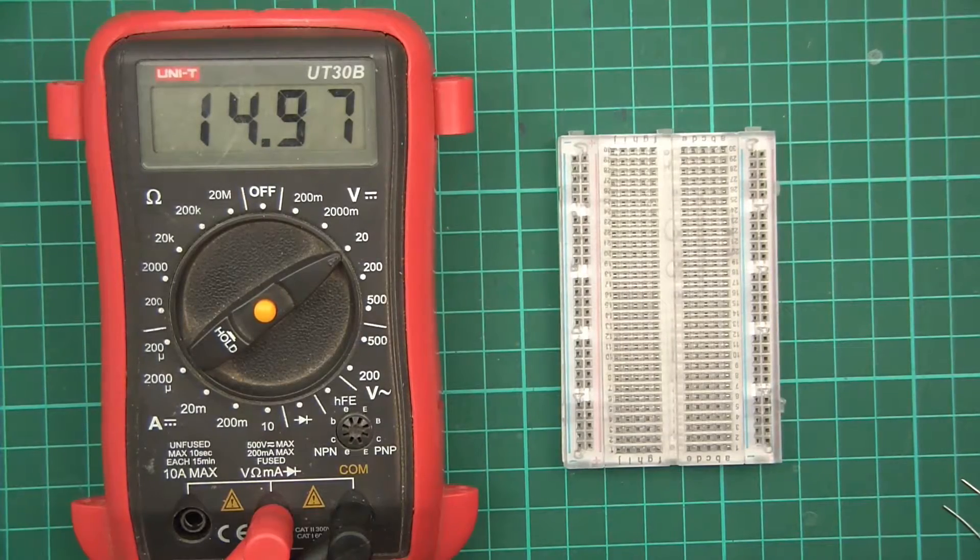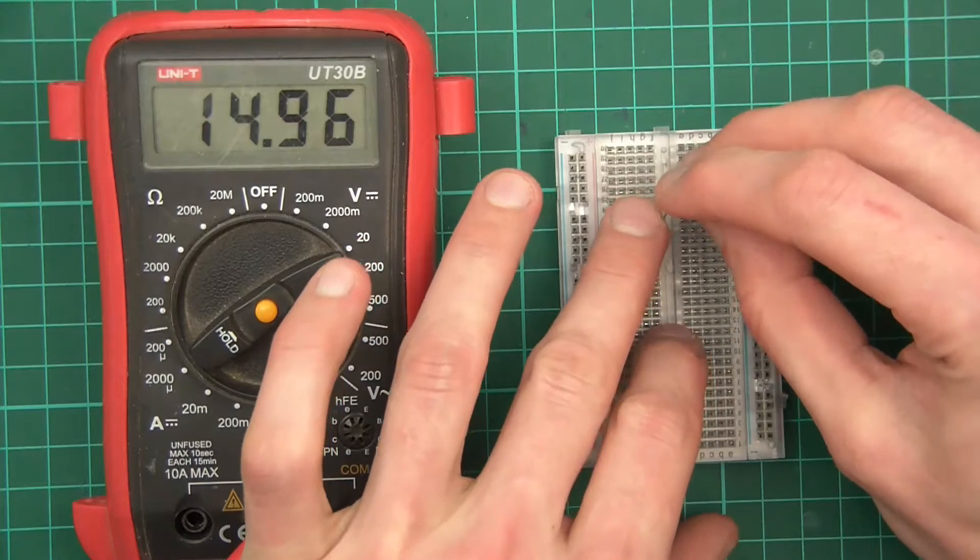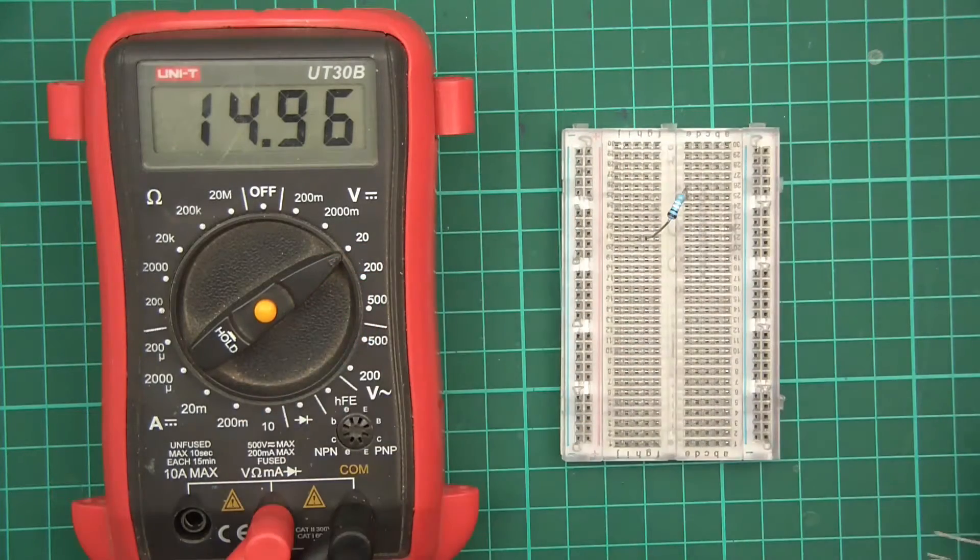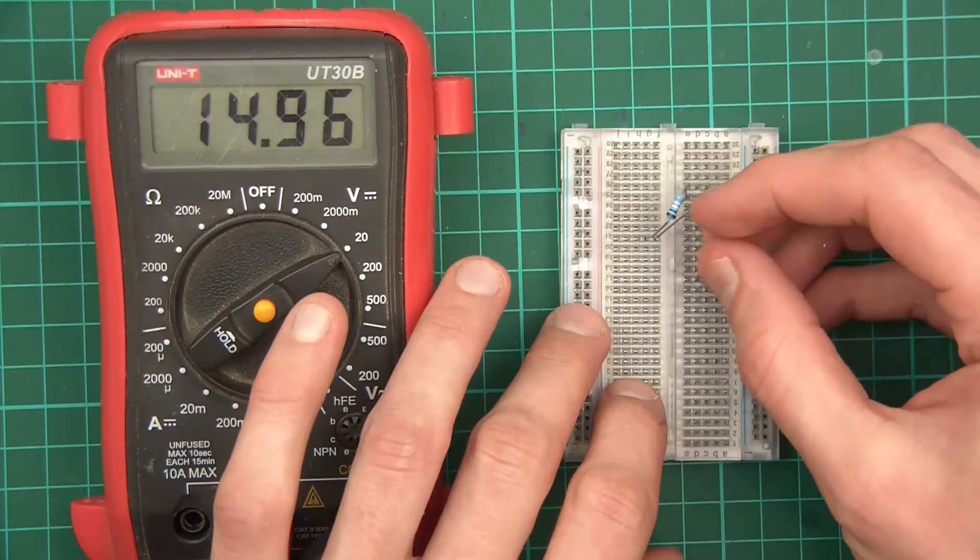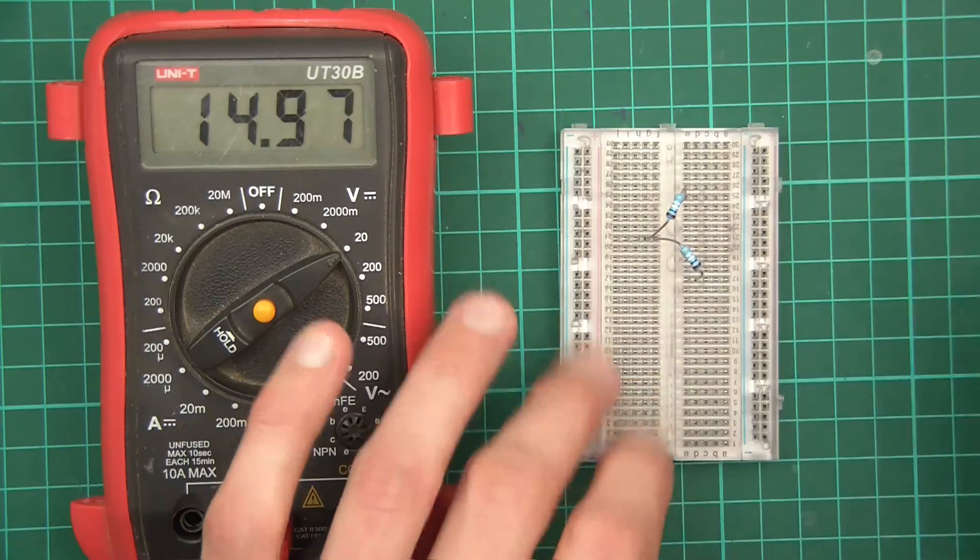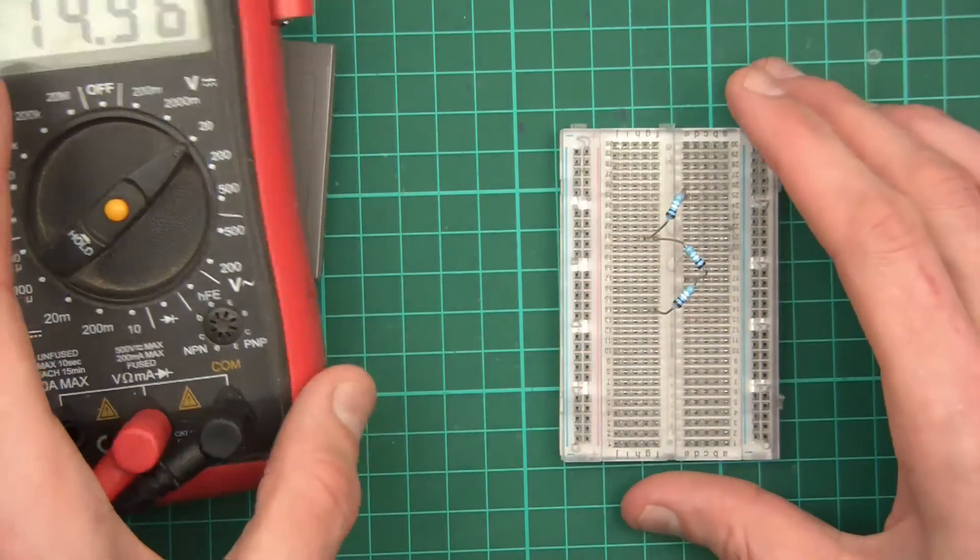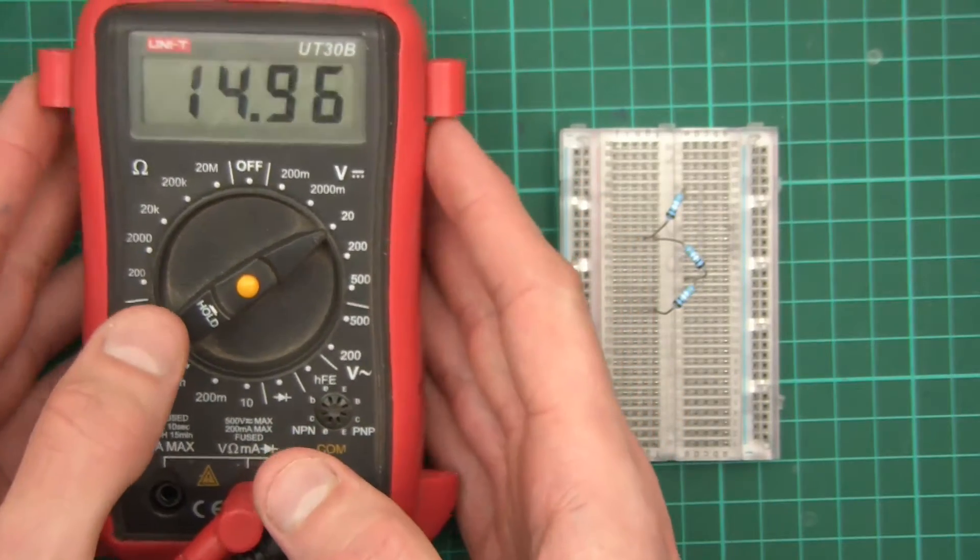15 volts and a breadboard. Now, I've got three 5k resistors and I'm just going to push these in here. Let's go there to there and now the next one will go here to here and the next one will go here to here. So, three 5k resistors and 15 volts.